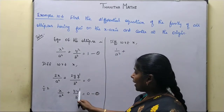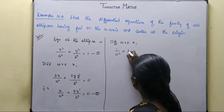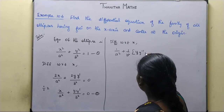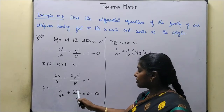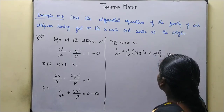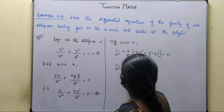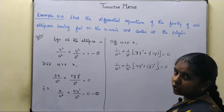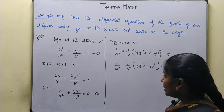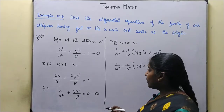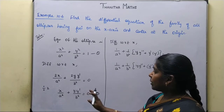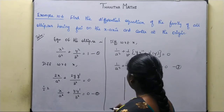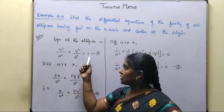Now we differentiate again to get equation number 3. We don't need to differentiate further — instead we use the elimination method to eliminate a-squared and b-squared, forming an equation using the determinant method.